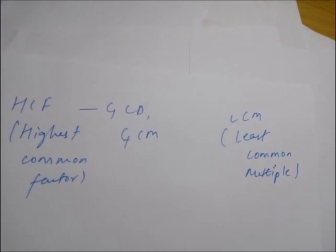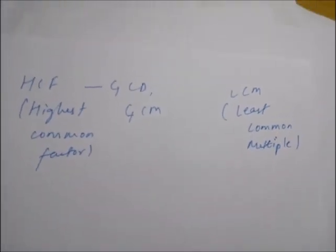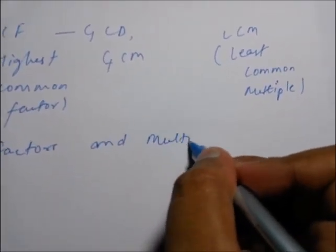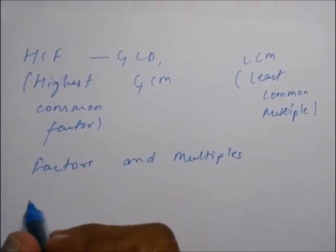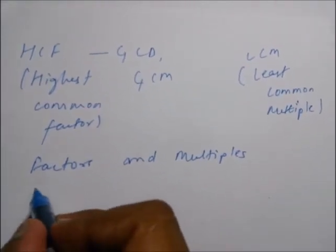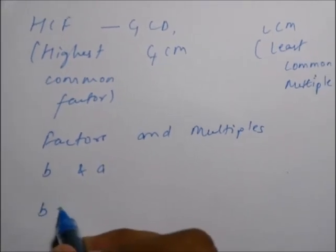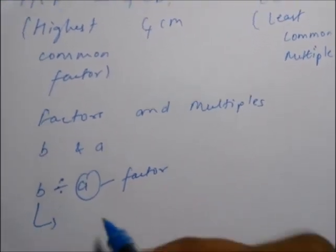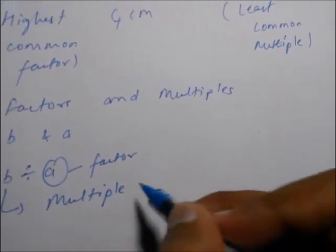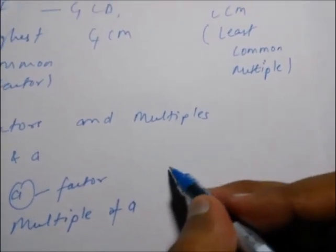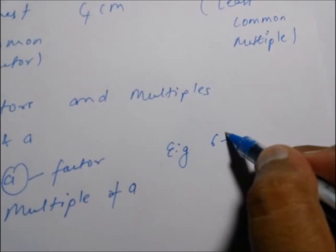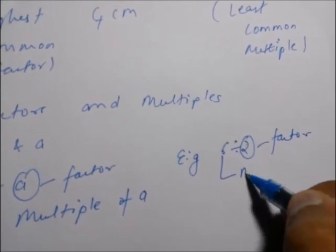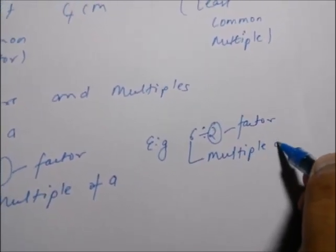Before knowing about HCF and LCM, we must know about factors and multiples. Suppose we have two numbers B and A. If B is divided by A, then A is the factor and B is the multiple of A. For example, 6 divided by 2: here 2 is the factor and 6 is the multiple of 2.